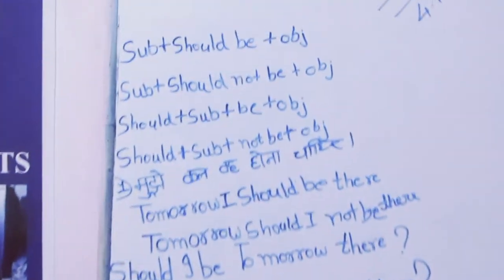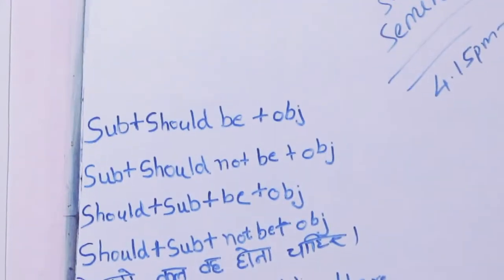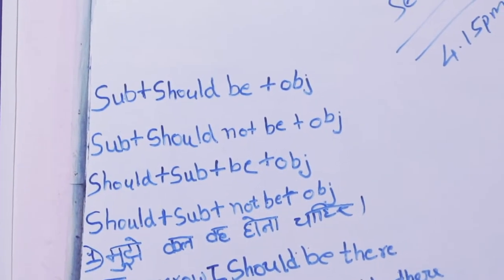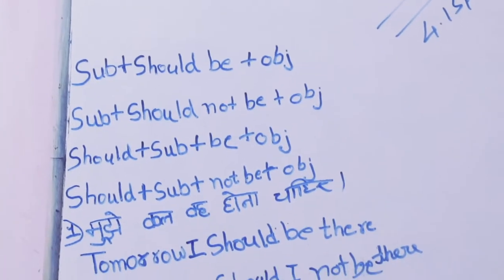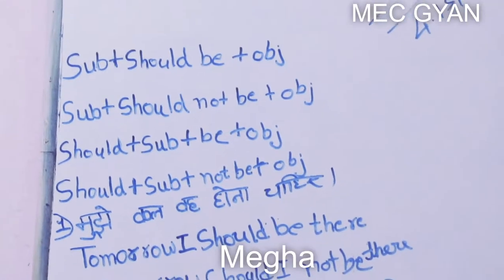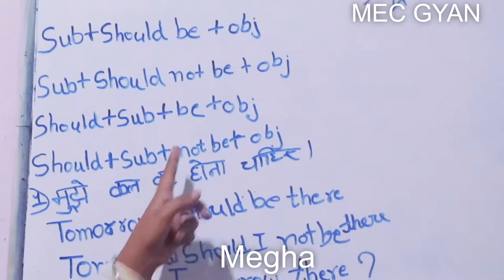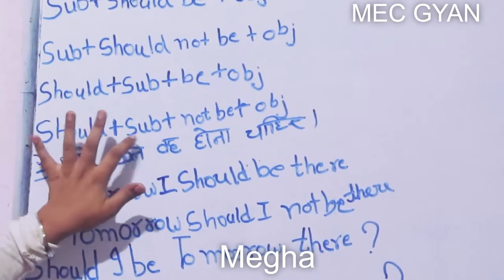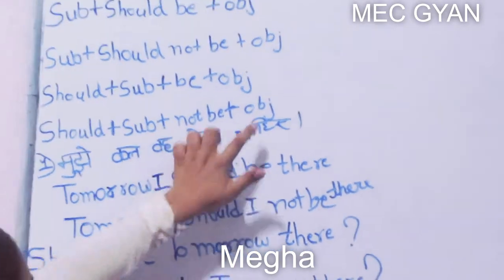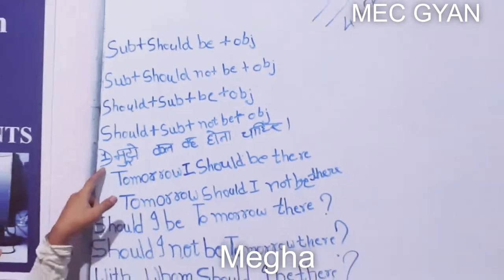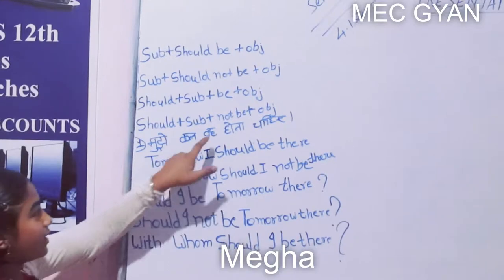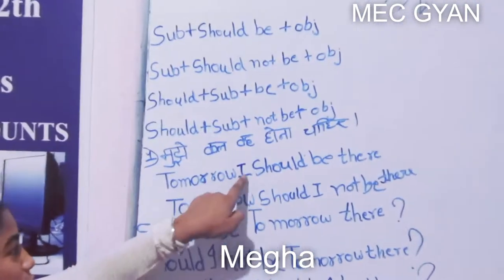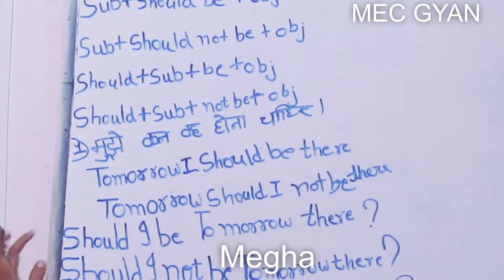The structures are: Subject plus should be plus object. Subject plus should not be plus object. Should plus subject plus be plus object. Should plus subject plus not be plus object. For example: Tomorrow I should be there.